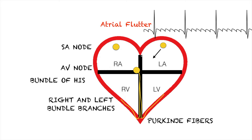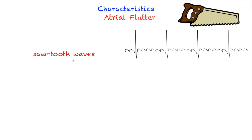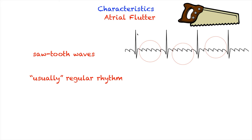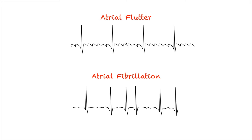The characteristics of atrial flutter: these uniform waves kind of look like sawtooth waves. Another characteristic — and a key difference between AFib and A-flutter — is that atrial flutter usually has a regular rhythm, meaning the same distance between R intervals. As a review: atrial flutter has these sawtooth waves that are very uniform and the rhythm is regular. On the other hand, in atrial fibrillation you are not going to see sawtooth waves; instead you will have quiver waves, and one of the major characteristics of AFib is that they are very irregular.